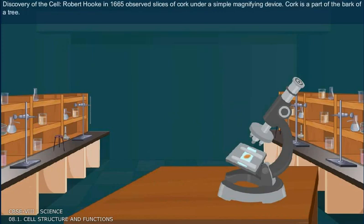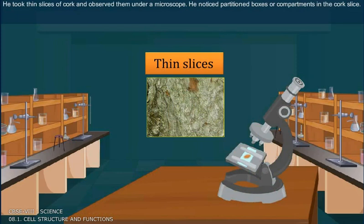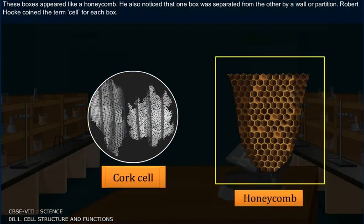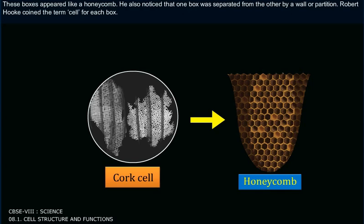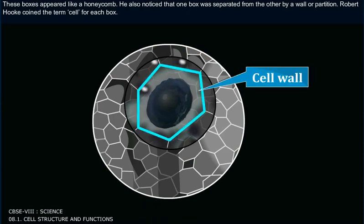Discovery of the Cell: Robert Hooke in 1665 observed slices of cork under a simple magnifying device. Cork is a part of the bark of a tree. He took thin slices of cork and observed them under a microscope. He noticed partition boxes or compartments in the cork slice. These boxes appeared like a honeycomb, and one box was separated from the other by a wall or partition. Robert Hooke coined the term 'cell' for each box.